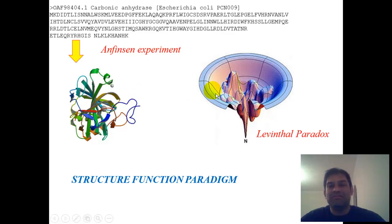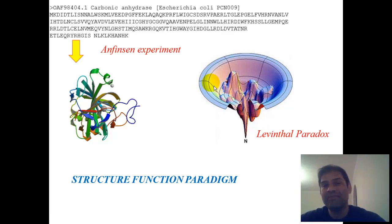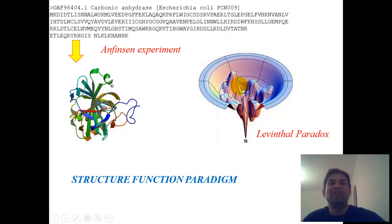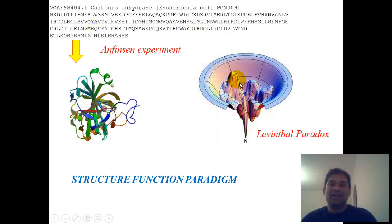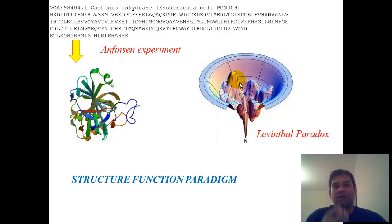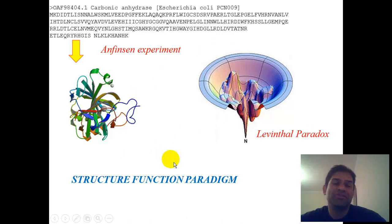One of the ways to explain the Levinthal paradox is by thinking about it in terms of thermodynamics—specifically, you have a folding funnel. The thermodynamics and the energy landscape is a little bit different than for any other reaction that occurs in a cell. Going from a non-native to a native protein involves going through energy bumps and barriers until you eventually and exponentially get down to lower and lower energy states. Those are things that help explain the structure-function paradigm.